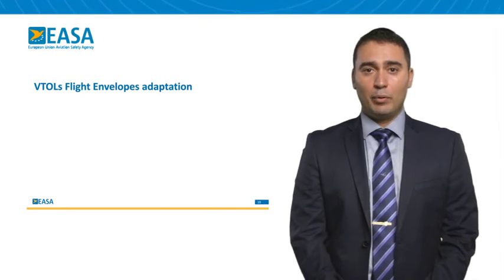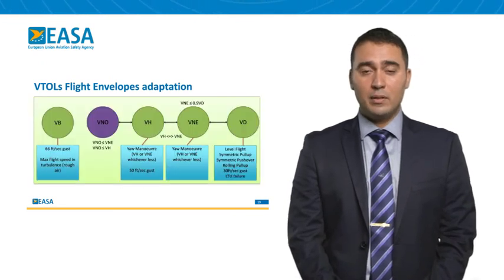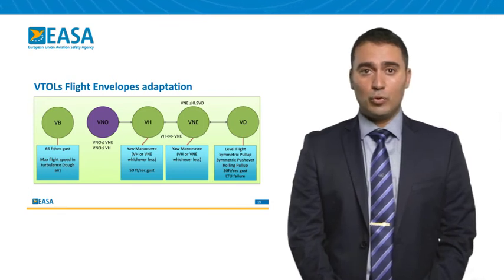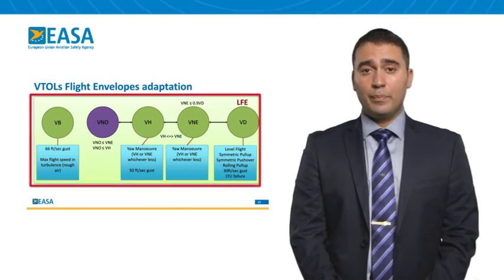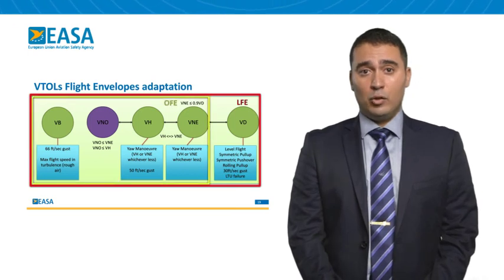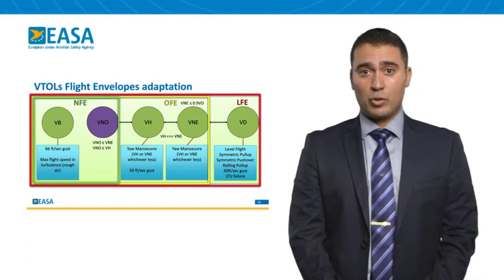Now we'll go through an example of how we would need to adapt characteristic speeds when considering VTOLs. The speeds derived from structural requirements — shown in green — include VD, VNE, VH (which could be equal or different), and VB, which is the maximum flight speed in turbulence. VD would define the boundary of the limit flight envelope. The operational flight envelope would be defined by VNE or VH, whichever is higher. To define the normal flight envelope we could refer to velocity normal operation (VNO), a speed not determined by structural requirements but rather by handling qualities or performance requirements.